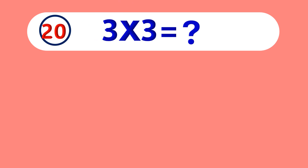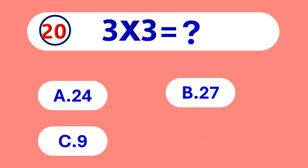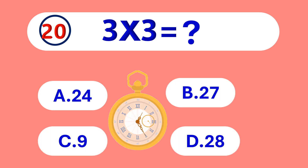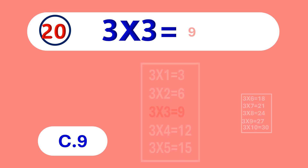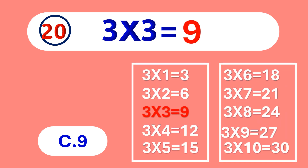3 times 3 is equal to... 9. 3 times 3 is 9.